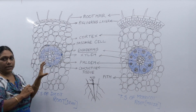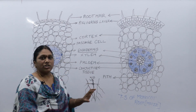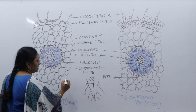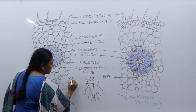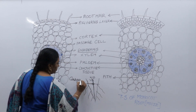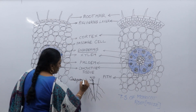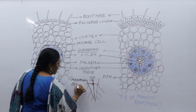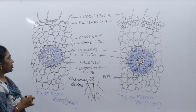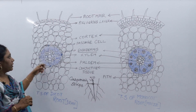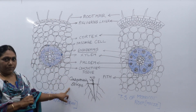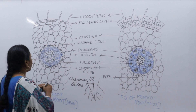The innermost layer of the cortex has thickenings in its radial and tangential walls. Those thickenings are called as casparian strips. The thickenings found in the radial and tangential walls of the endodermis are called as casparian strips.